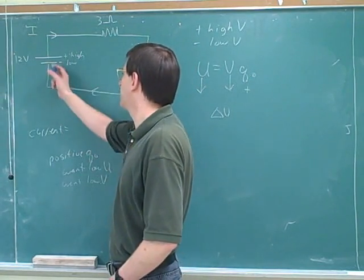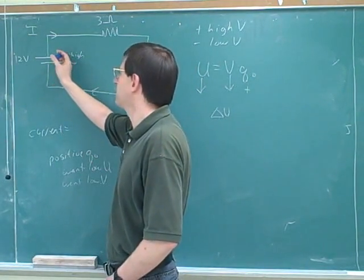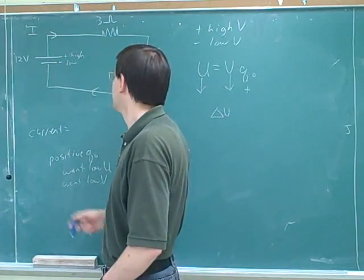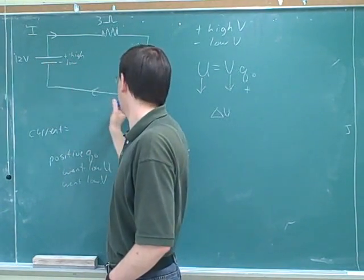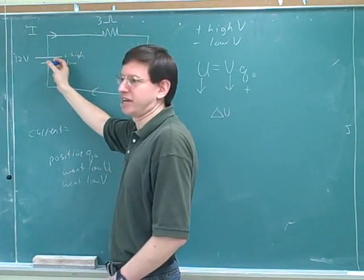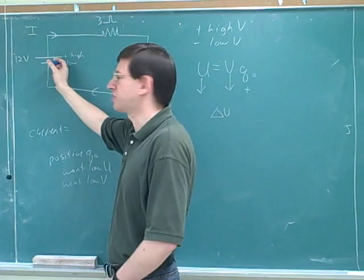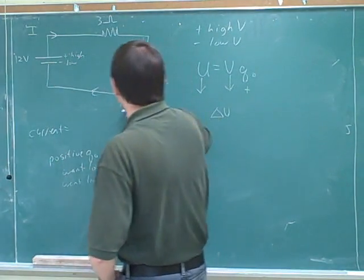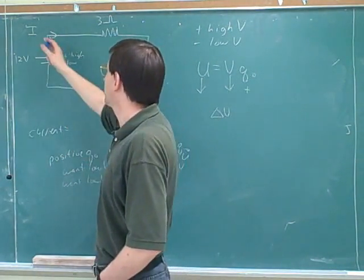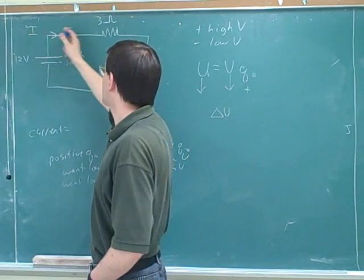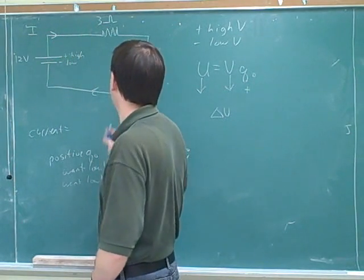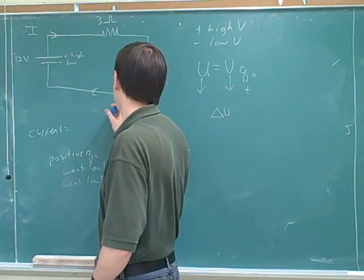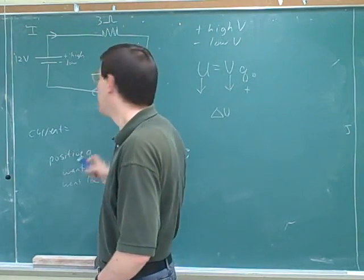A negative charge would tend to want to get away from something negative and move towards something positive. This doesn't really represent a negative charge, but the electron is acting like it represented a negative charge, moving away from here and towards here. So even though we imagine a current of positive charges moving clockwise here, what's really happening is a current of negative electrons moving counterclockwise.